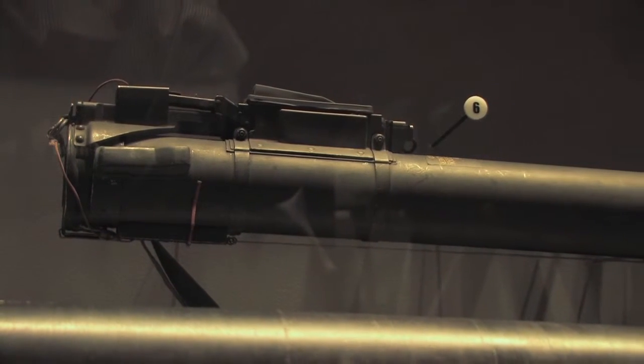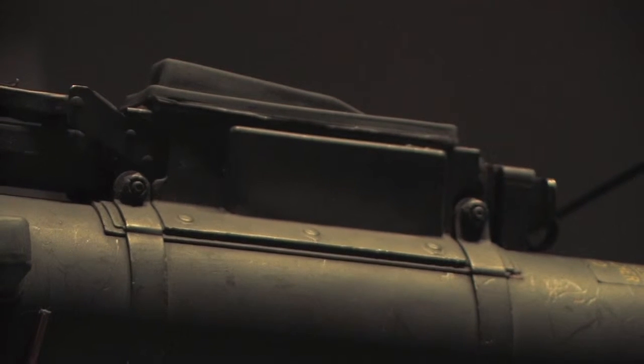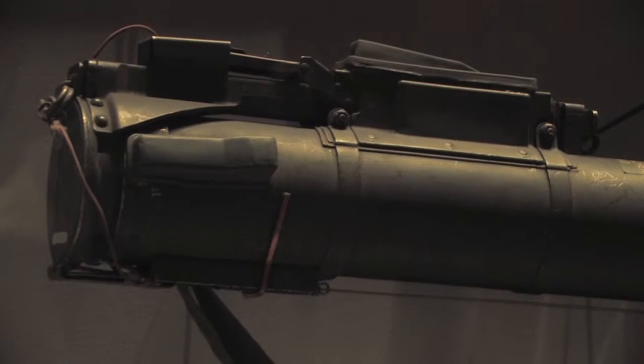The way you operate it is you simply extend the tube which armed it. You put it on your shoulder, you sight it in, and press a rubber button on the top. Wham! That round was downrange.